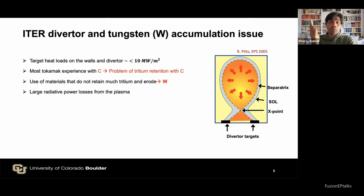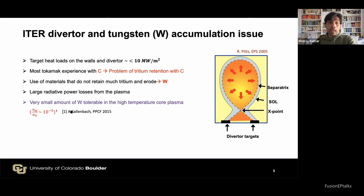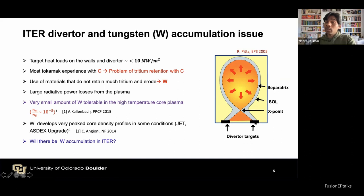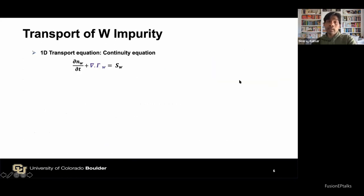The issue with tungsten is large radiative power losses from the plasma, since tungsten atoms are not fully ionized even at fusion-relevant temperatures. It emits line radiation that cools down the central plasma temperature, which is undesirable. Only a very small amount of tungsten is acceptable in the high-temperature core plasma. It has been found that tungsten develops very peaked core density profiles in some conditions in existing tokamaks such as JET and AUG, so tungsten accumulation in ITER remains an open question.